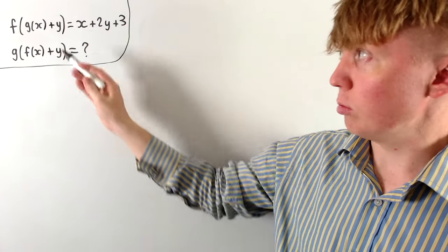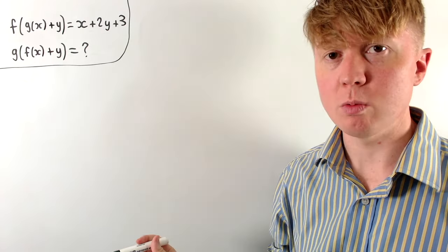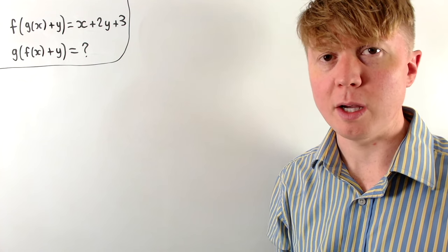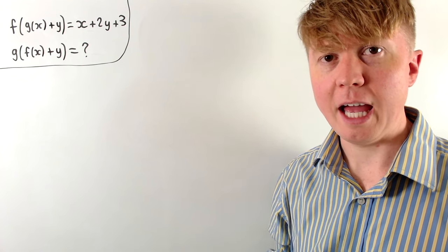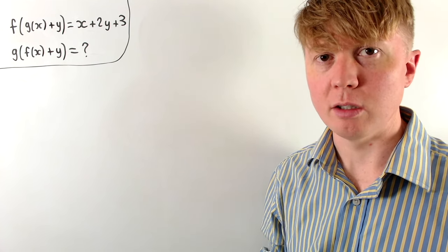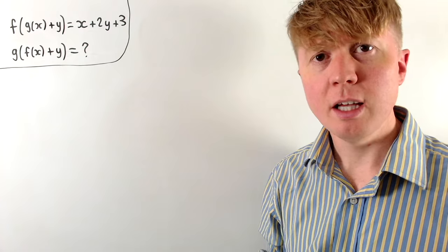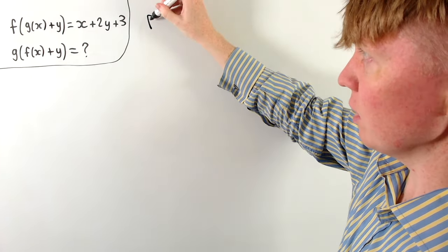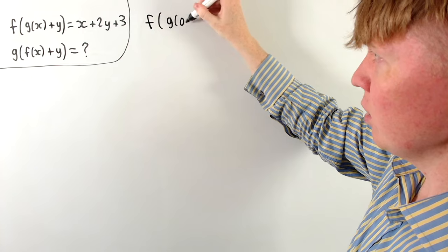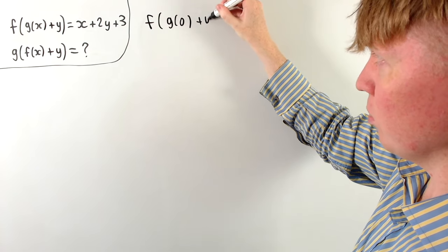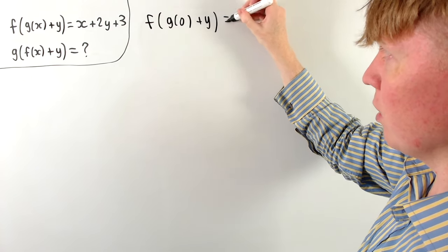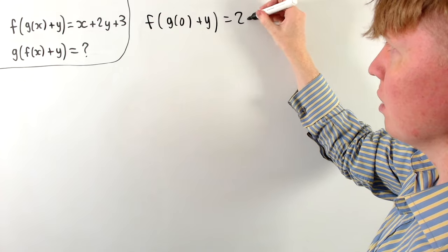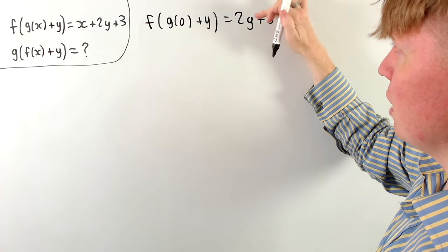At the moment we've got the function g inside there as well, but we can get rid of this dependence on g just by setting x equal to some arbitrary value. So let's say x equals zero. If we substitute this in, we're going to get on the left hand side f of g of zero plus y equals zero plus two y plus three, so just two y plus three.